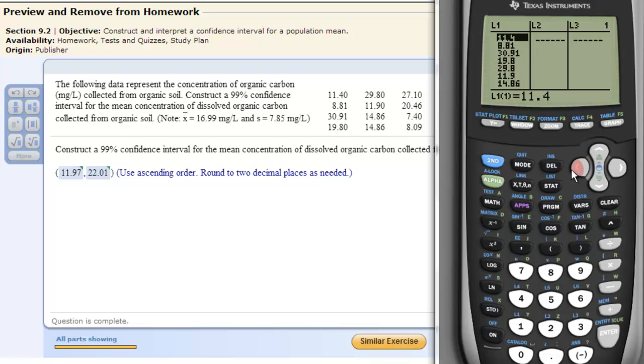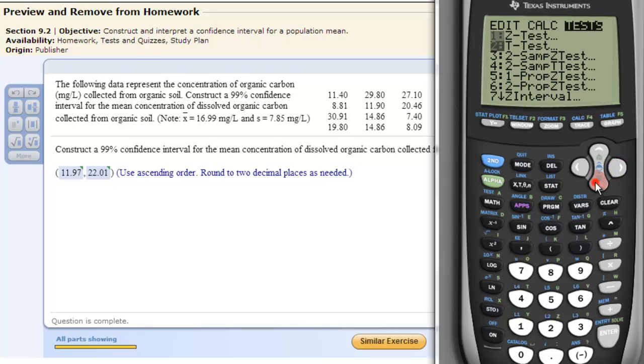Once you have it in List 1, then we go to STAT again and we go over to Tests. Then we go down until we get to the T interval. So this is interval one here, number 8, click Enter.